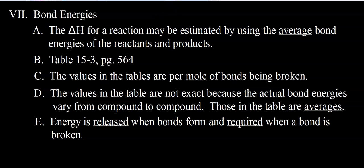There are lots of different ways of calculating delta H for a reaction, and we've seen a few already. Another way is using the bond energies of all the substances involved in the reaction. The delta H for a reaction may be estimated by using the average bond energies of the reactants and products. Take a look on page 564.